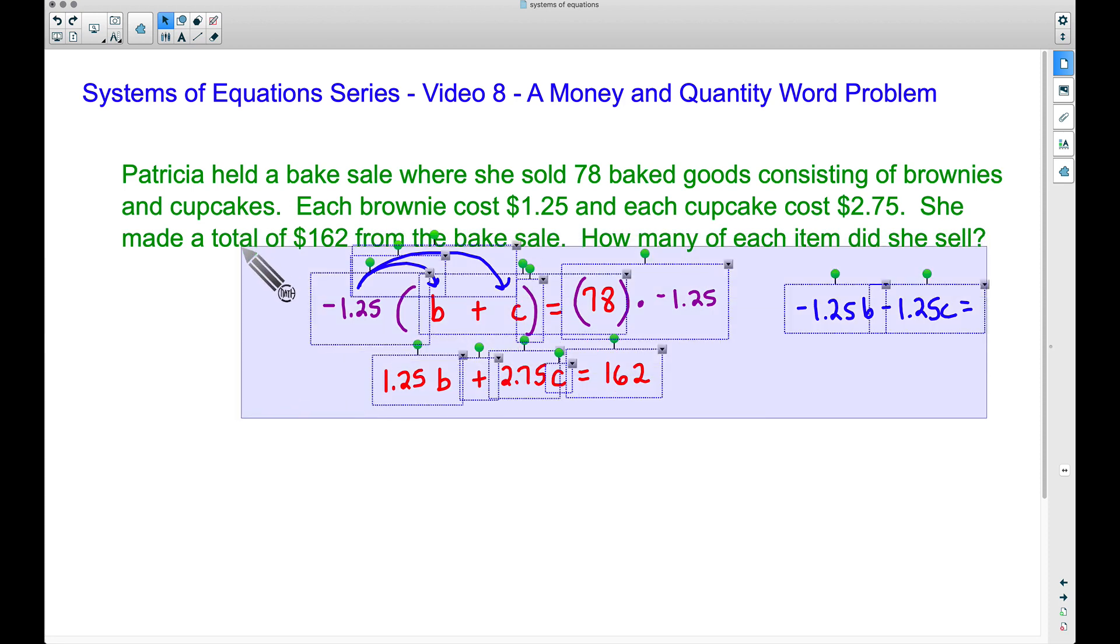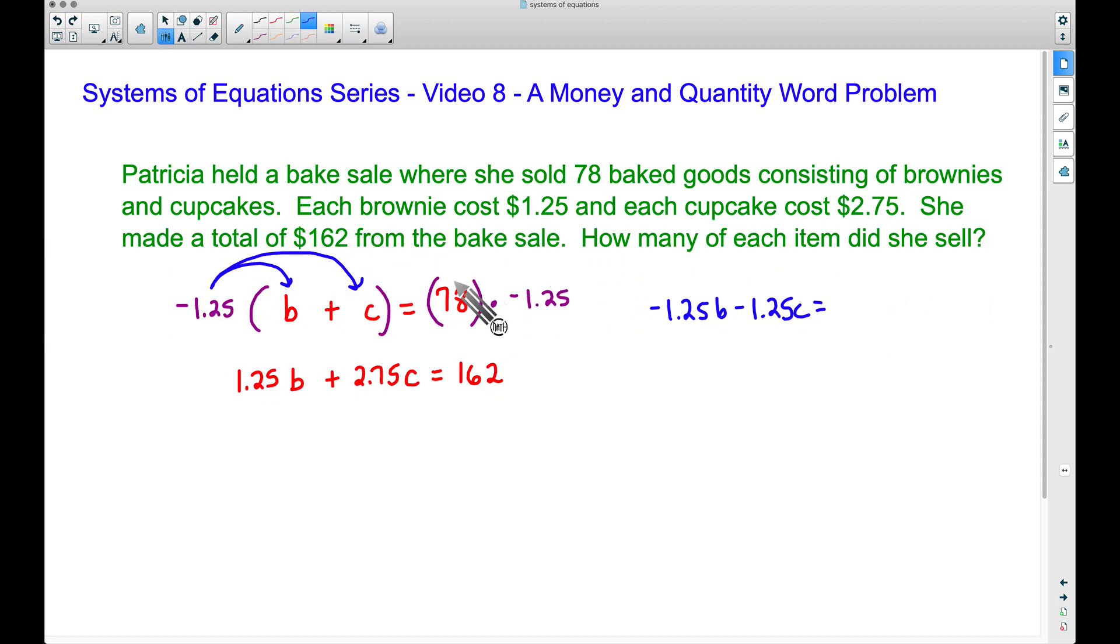I'm going to make a little bit of room here. Multiplying these together, we will get -97.5. Just grab a calculator there, or you can crunch that out pencil and paper.